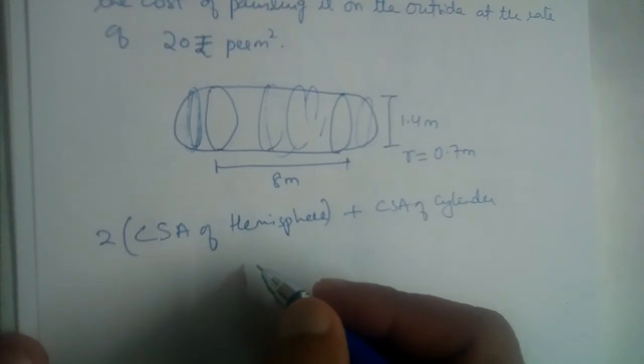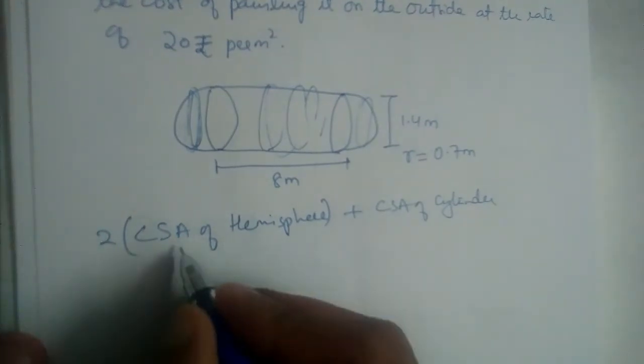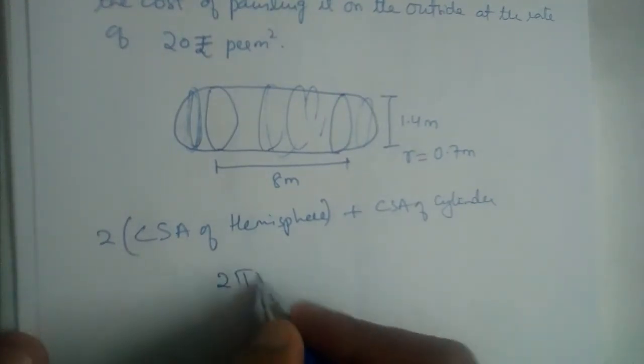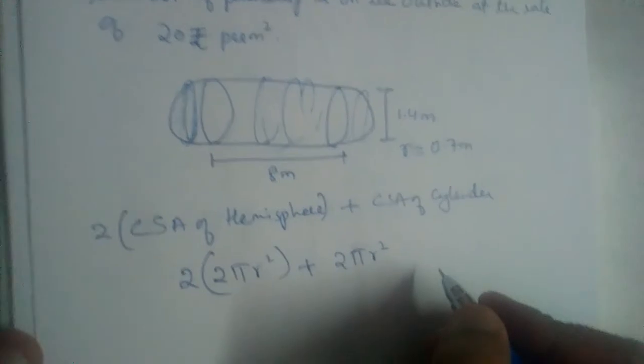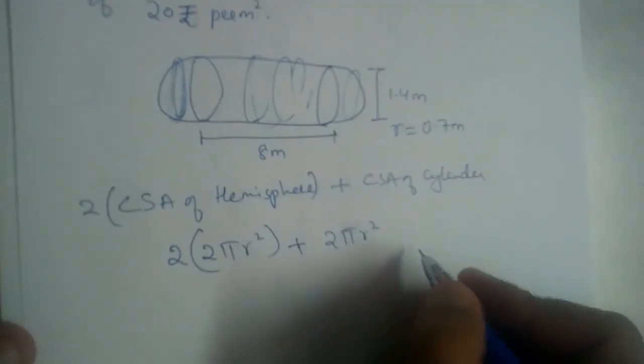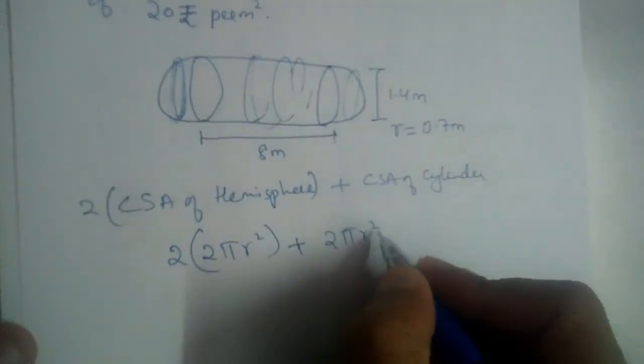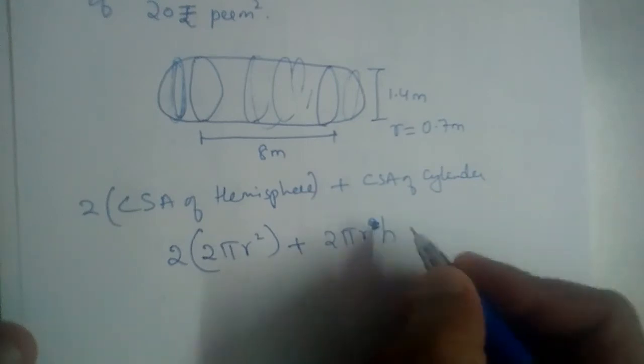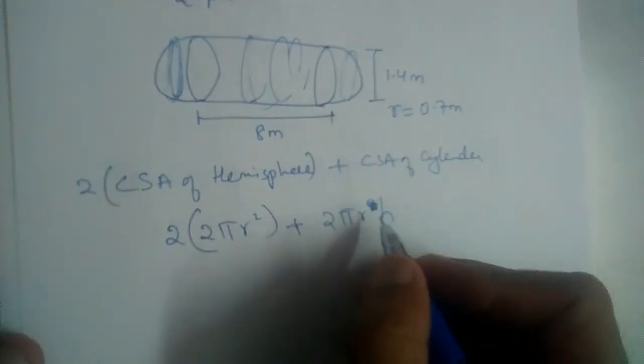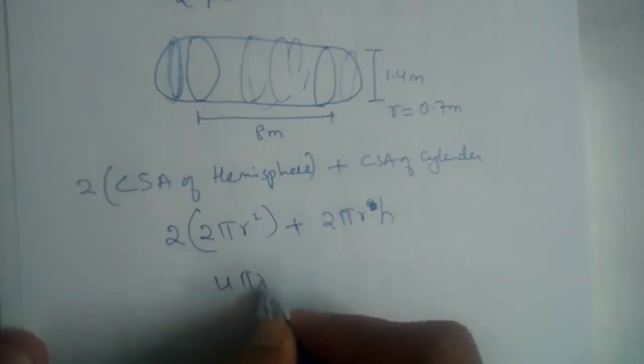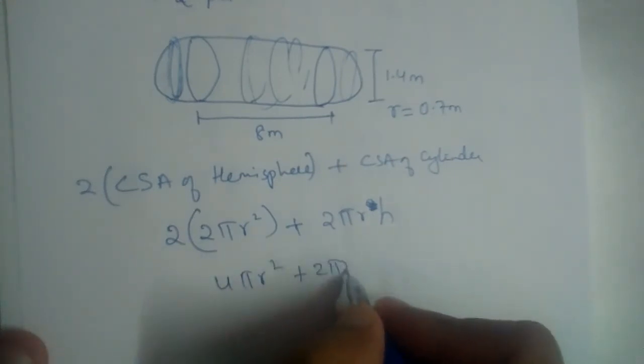Curved surface area of hemisphere is 2πr². And this is 2 plus curved surface area of cylinder is 2πrh. So this will be equal to 4πr² + 2πrh. What can we take common from here? We can take 2πr common. If we take out 2πr, here 2r will be left and here h will be left.